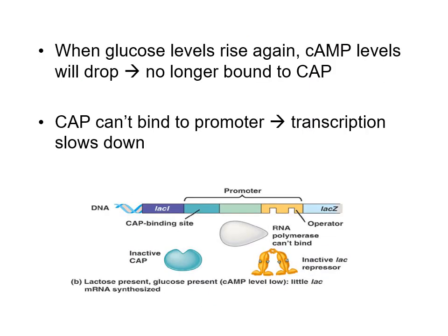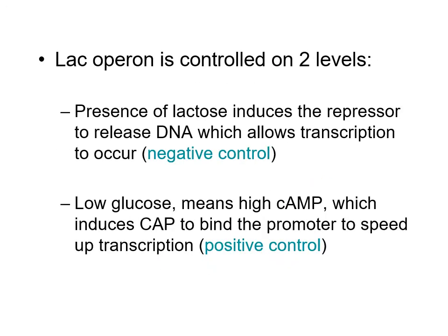When glucose levels rise again, cAMP levels drop and we don't have the same activator protein. So RNA polymerase is going to have a harder time binding, and transcription levels will be very low. Even though the repressor is not present, we don't have this effective activator because we don't have cAMP due to sufficient glucose. So think of this as two levels of control: negative control where the repressor is normally bound but removed when lactose is present, and positive control where low glucose levels turn on the activator protein, allowing high-affinity binding of RNA polymerase.